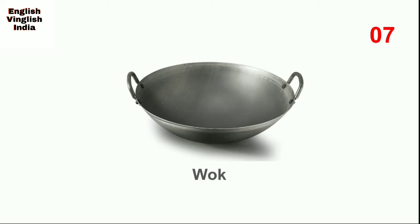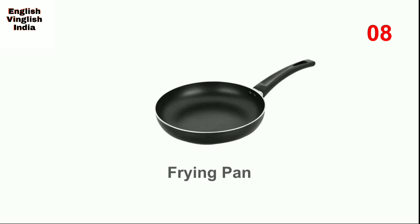Next, wok. A wok is a type of thick, circular, and deep cooking pot. It can be used for both shallow and deep frying — for making pakoras, for sautéing vegetables, for making puris and kachauris, we use a wok.